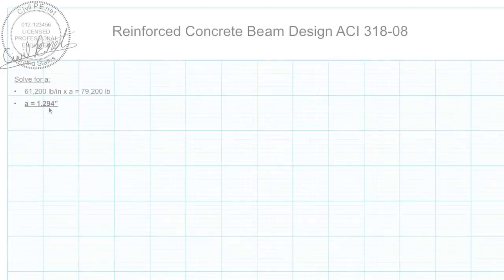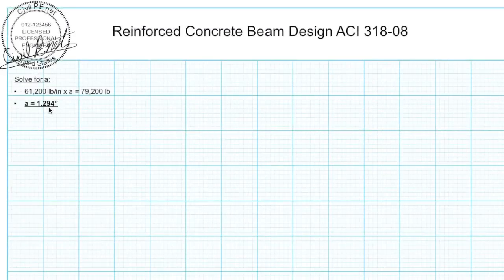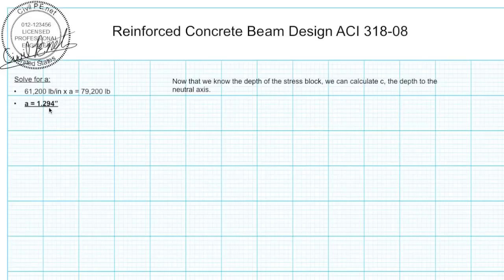CivilPE.net. So what do we do with this? Now we can use this to calculate c, the depth from the extreme compression fiber to the neutral axis of our beam.